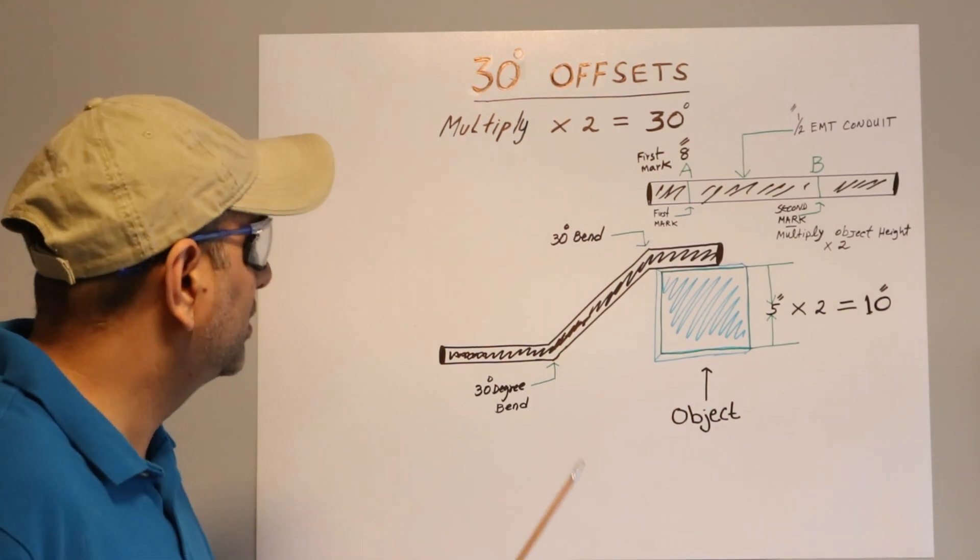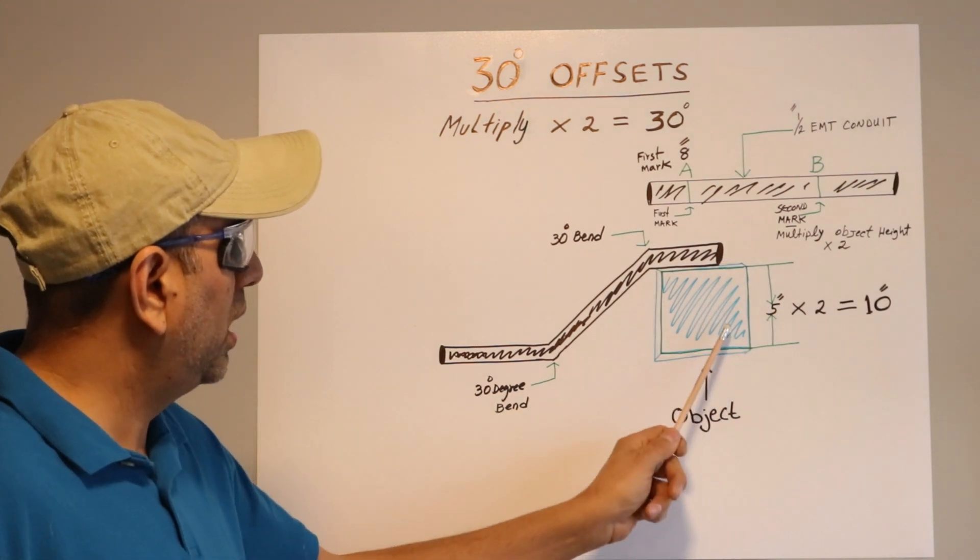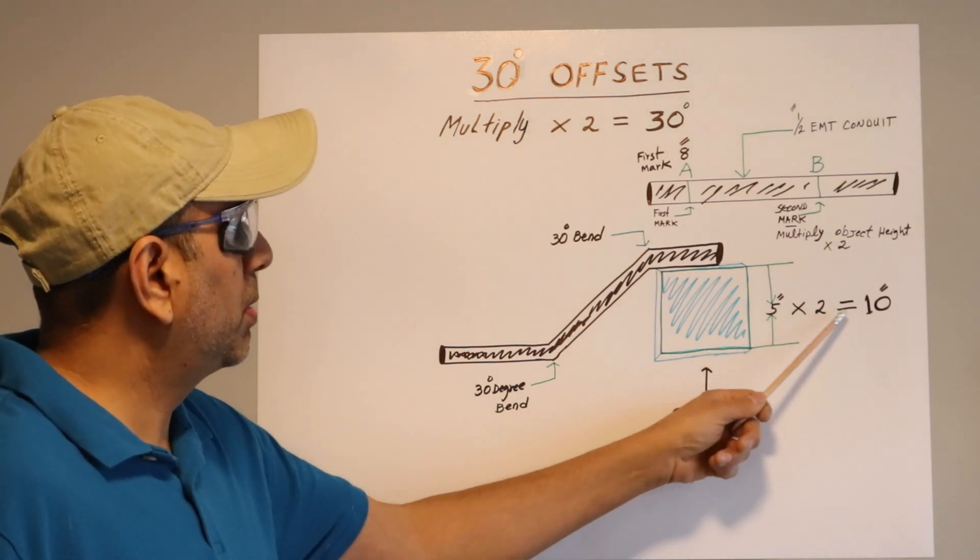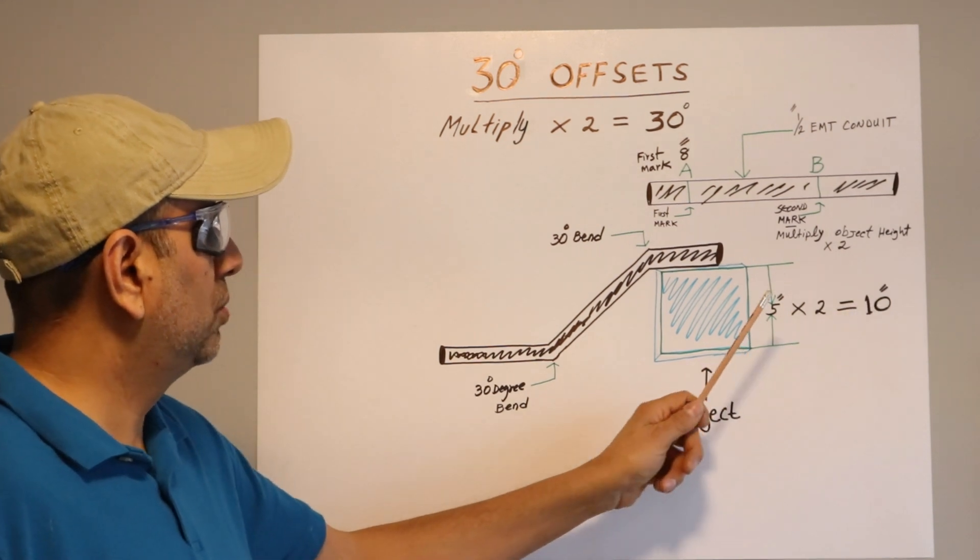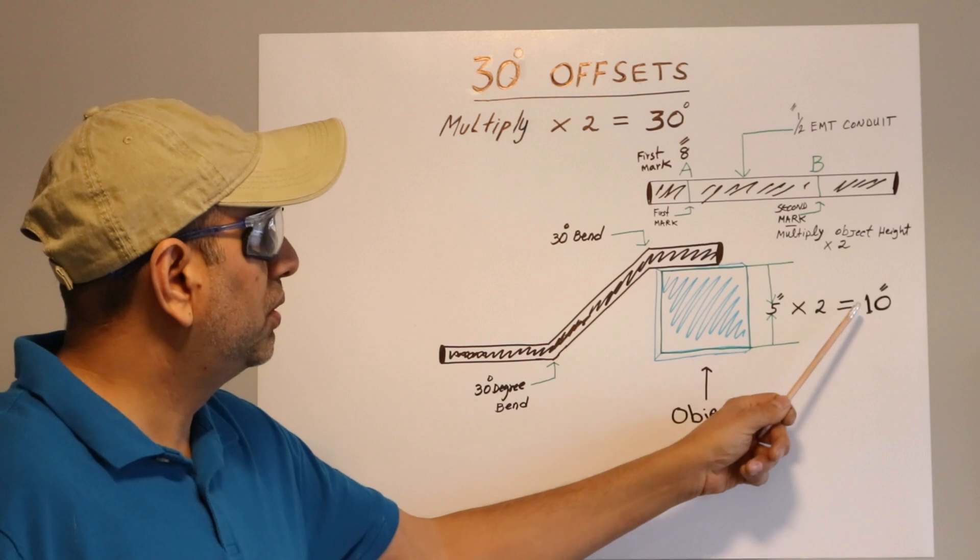It's a little formula, this little calculation we keep in our mind—it's not difficult. Again, if our obstacle is five inches high, we just multiply by two and then we get ten inches.